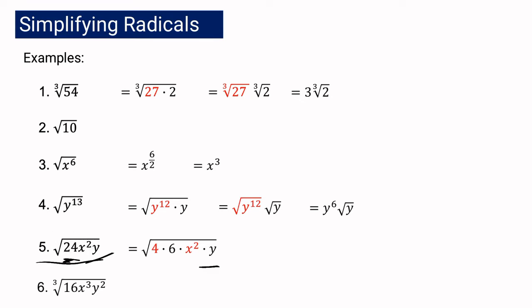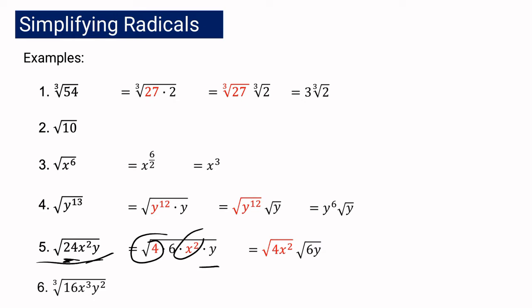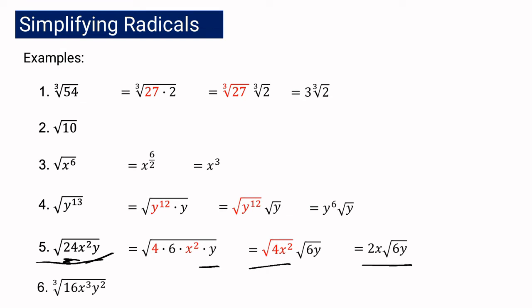We are just going to copy y. We combine the terms that are perfect squares: 4 and x squared. So we have the square root of 4x squared multiplied by the square root of 6y. The square root of 4x squared is 2x, and we simply copy the square root of 6y. So the square root of 24x squared y is equal to 2x times the square root of 6y.